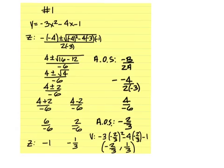In this case the zeros are negative 1 and negative 1 third. The axis of symmetry is negative 2 thirds, and the vertex is negative 2 thirds and 1 third.